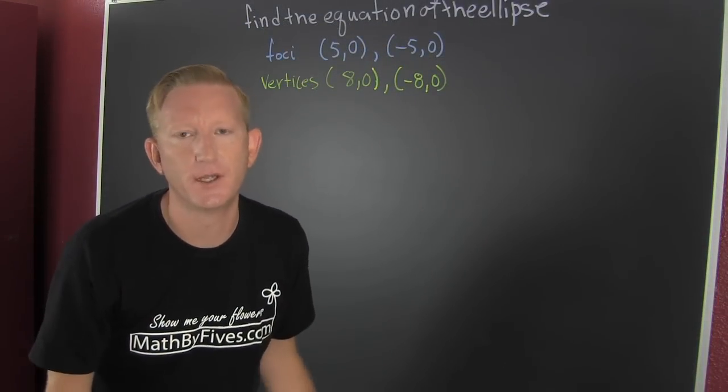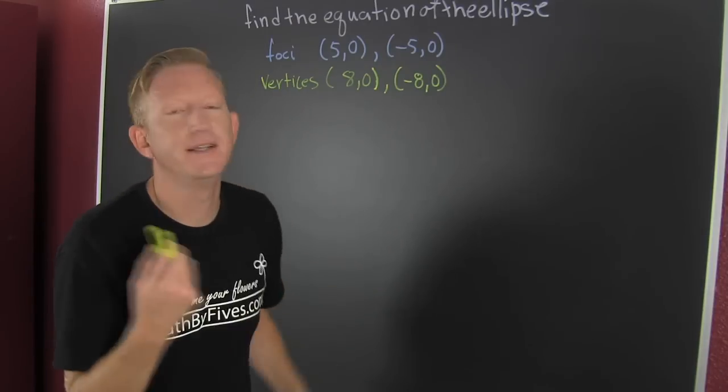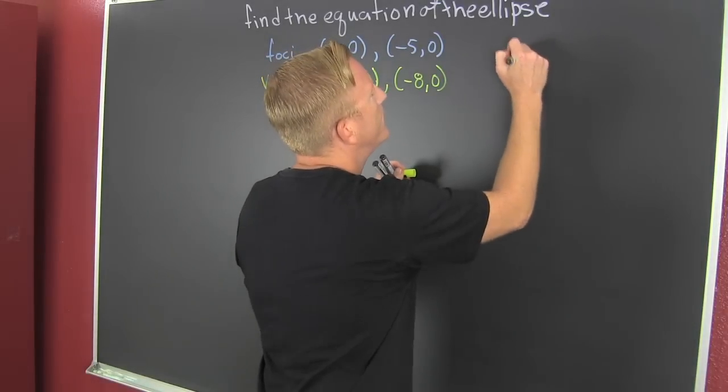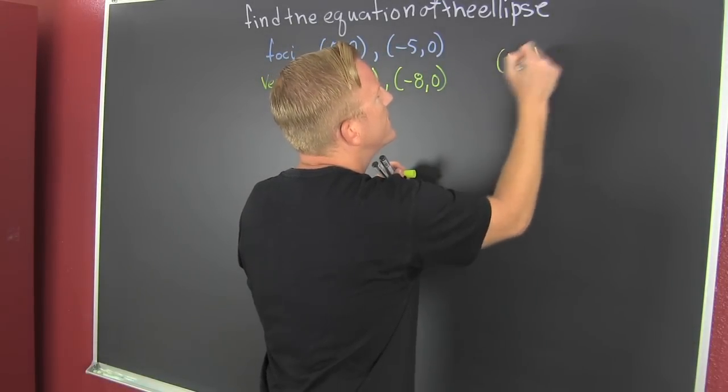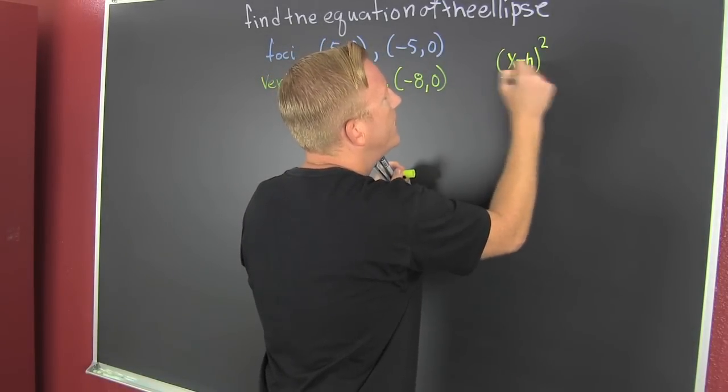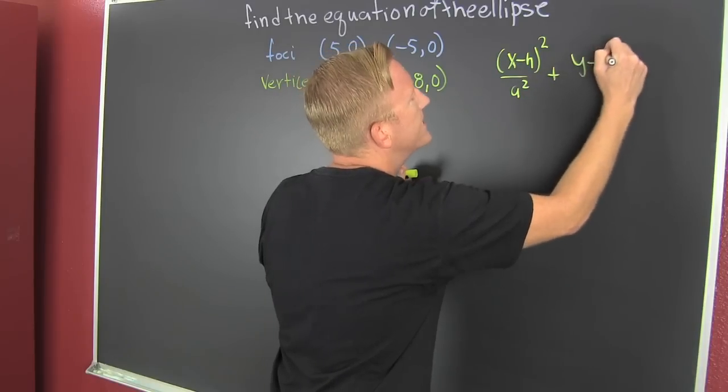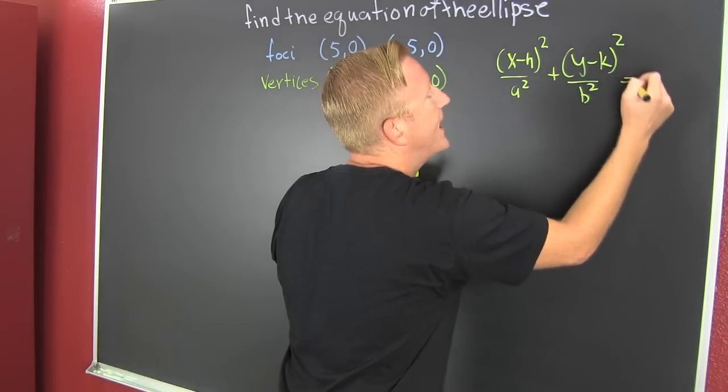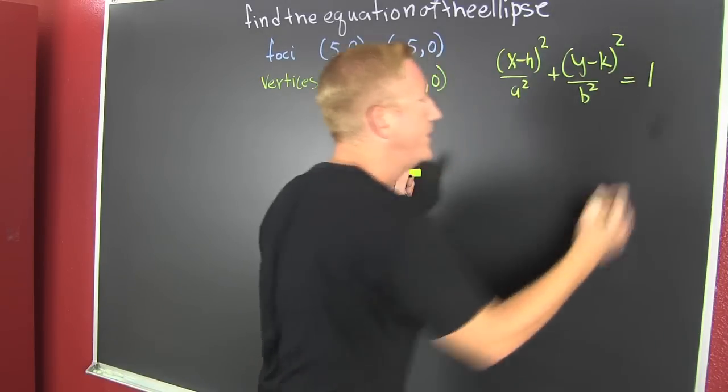We're trying to find the equation of an ellipse. They told us it was an ellipse, so we know it's of the form: x minus h squared over a squared plus y minus k squared over b squared, and that's gonna be 1.